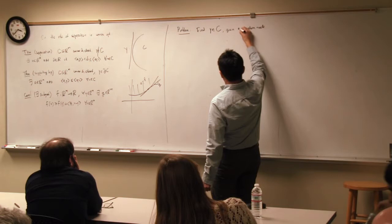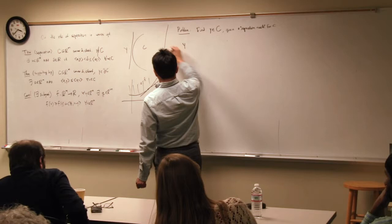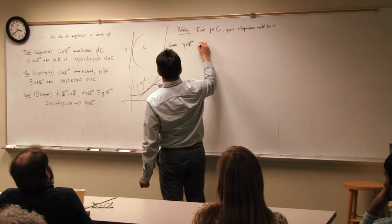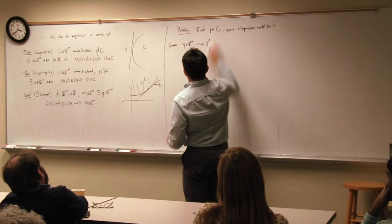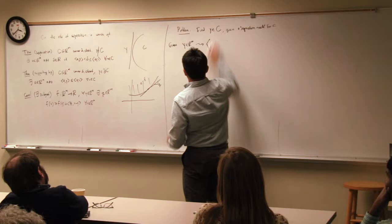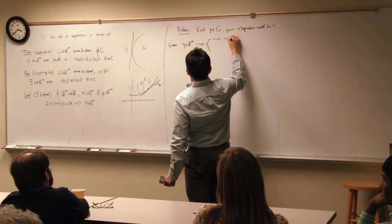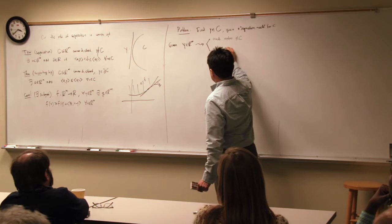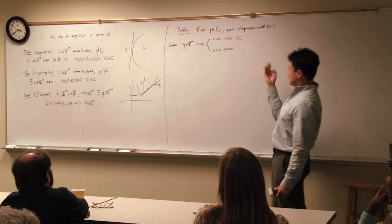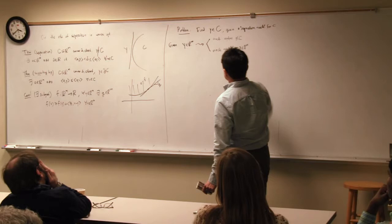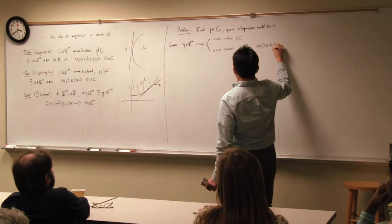A separation oracle works as follows: given Y in R^M, the oracle either verifies that Y is in C, or else it generates a separation hyperplane — that is, a vector A in R^M such that AY is less than or equal to AV for all V in C.